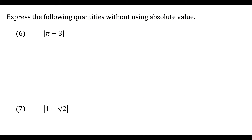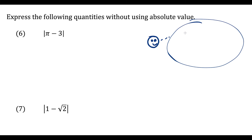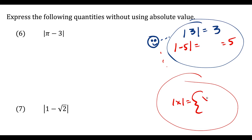For the next set of questions, we want to express quantities without using absolute value. The basic definition: when we take the absolute value of a positive number, it simplifies to whatever is on the inside — the absolute value of three is three. But when there's a negative on the inside, what's actually happening using the piecewise definition is: if the number is greater than or equal to zero, the absolute value equals that number; if it's less than zero, you throw a minus sign in front. So the absolute value of negative five is minus negative five, which is positive five.